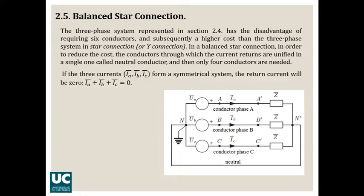That is due to the fact that the three currents, if the system is balanced and symmetrical, then the three currents A, B, and C have the same absolute value and they are shifted with an angle of 120 degrees. So you can demonstrate that their sum is going to be zero.